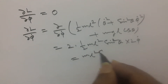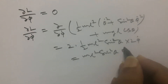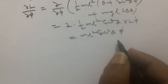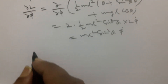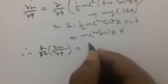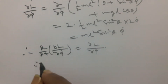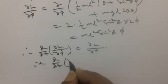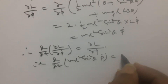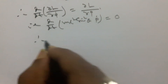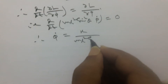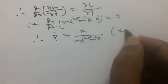So ∂L/∂φ̇ equals mL squared sine squared theta times phi-dot equals zero (constant), therefore phi-dot equals k divided by (mL squared sine squared theta), where k is a constant.